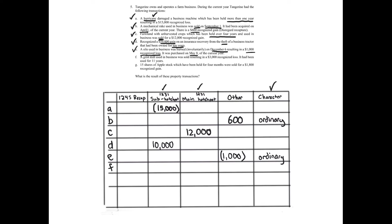Transaction F: a gristmill — business real property — was sold at a $3,000 recognized loss after being used for 11 years. It's not a capital asset, it's business real property. Under Section 1231, it's not the sub hotspot since it's a sale. For the main hotspot, it qualifies as a sale or exchange of business real property held more than one year. The $3,000 recognized loss goes into the main hotspot. We still can't net until transaction G is complete.